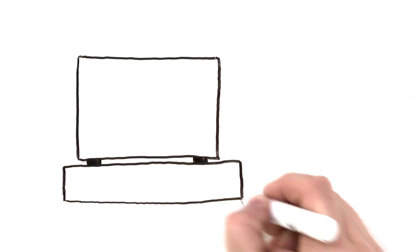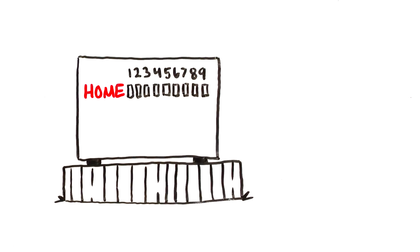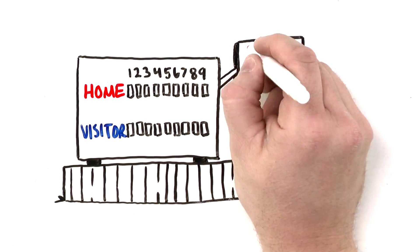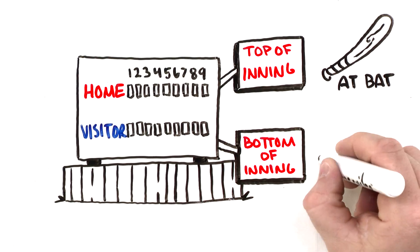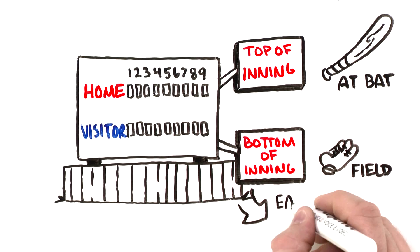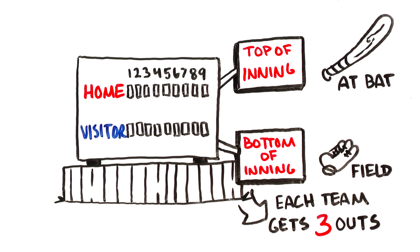In professional baseball, there are nine innings and each inning is divided in two. The top of the inning where one team is at bat, and the bottom of the inning where the team that was at bat grabs their gloves and goes into the field. Each team gets three outs in each half of the innings.